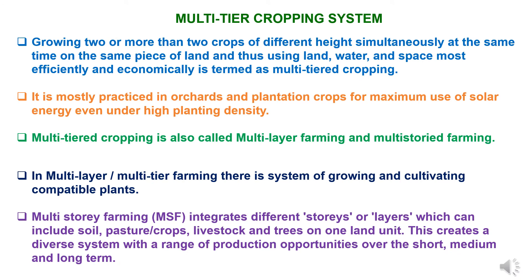First, to understand what is multi-tier cropping system. It can be defined as growing two or more than two crops of different height simultaneously at the same time on the same piece of land, utilizing land, water and space more efficiently and economically. As the name confirms — multi-tier — there are combinations of crops having various heights, different rooting patterns, growth patterns and yielding patterns. Multi-tier cropping system is mostly practiced in orchards and plantation crops for maximum efficient use of solar energy even under high planting density. This system is also called multi-layer farming or multi-storied farming system.